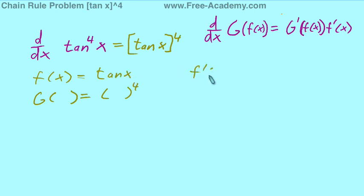Now, our f prime of x, then, is secant squared of x, and our g prime, in parentheses, is going to be 4 parentheses raised to the 3rd power, just using our power rule.